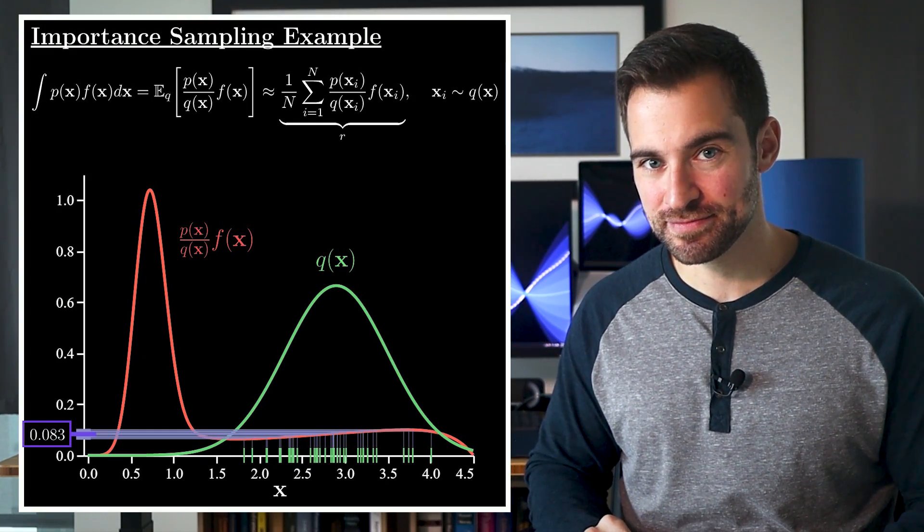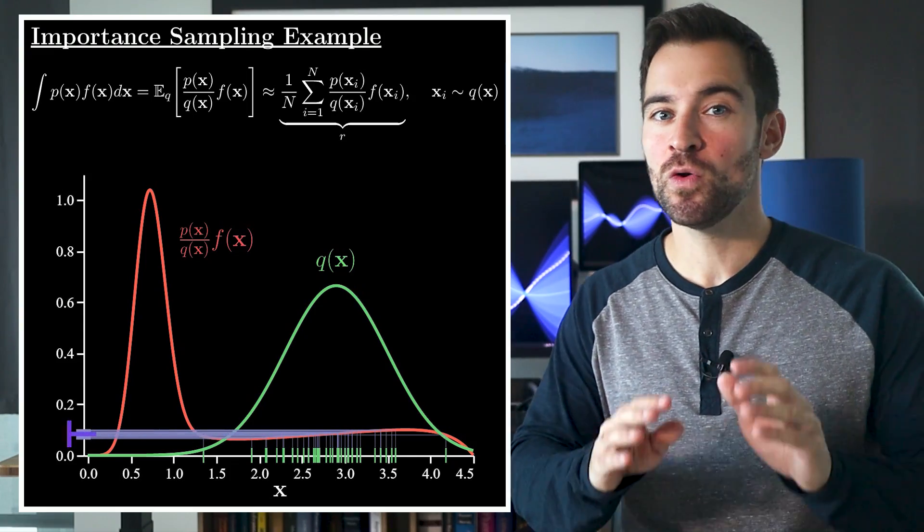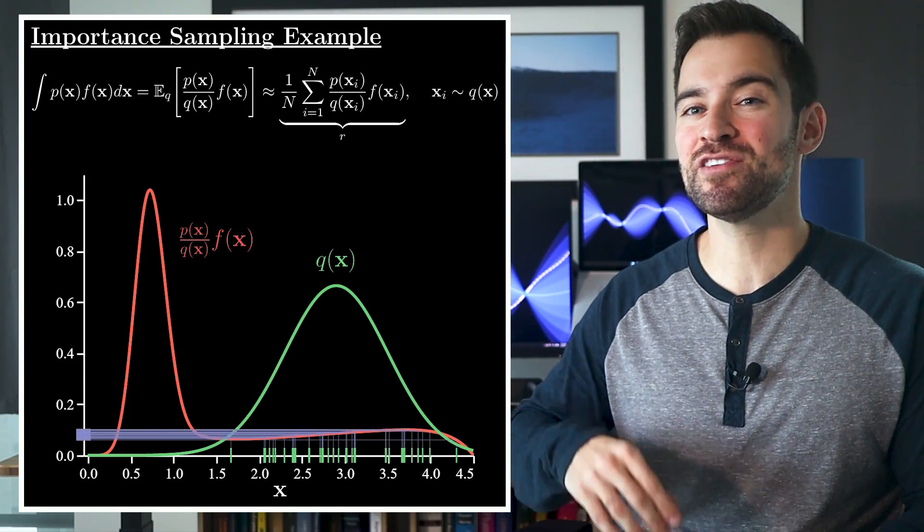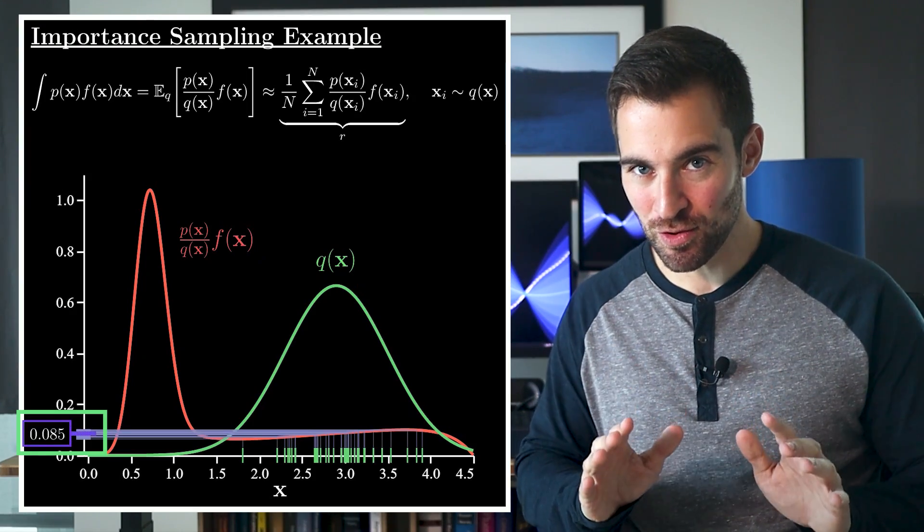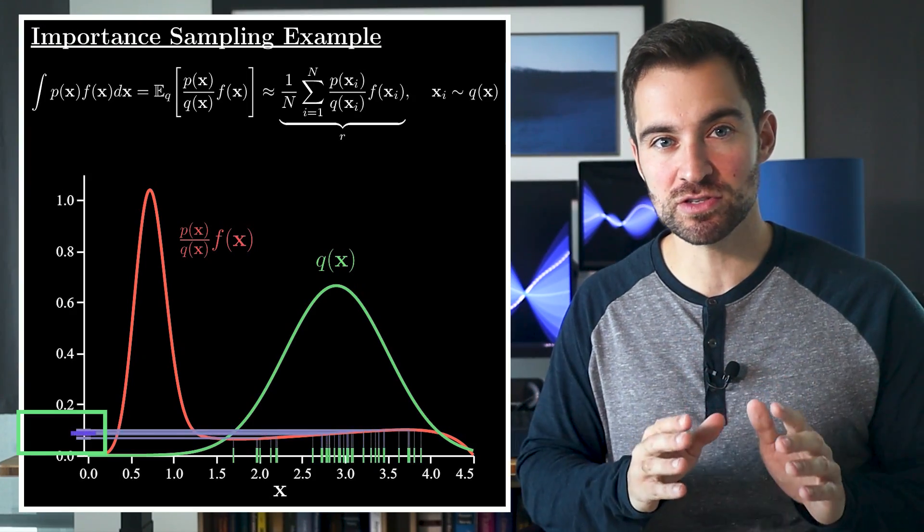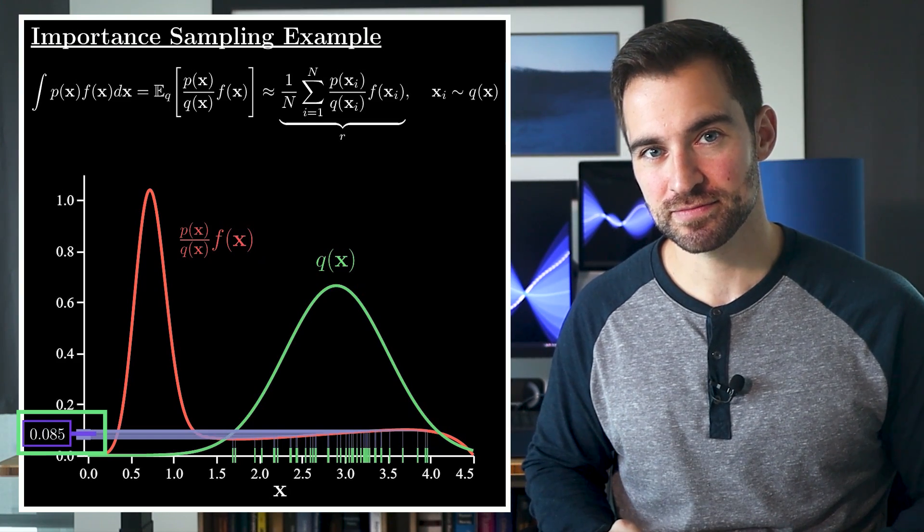This is our new estimate. And the whole point is, if we repeat this process, we'll get something that bounces around less than if we sampled the previous way. That's the whole idea. The variance is reduced, and with a single estimate, we expect to be less wrong.